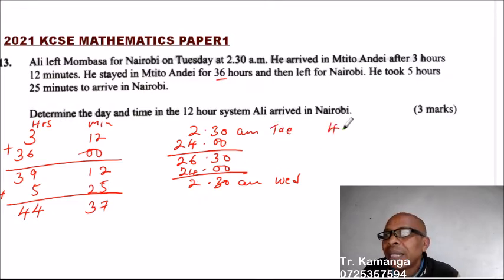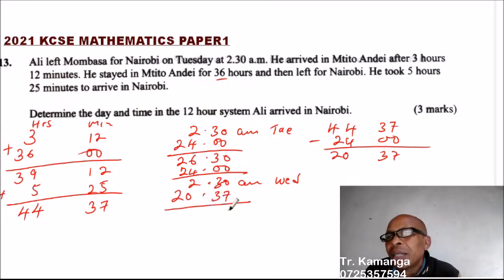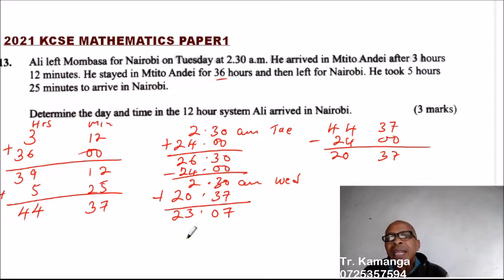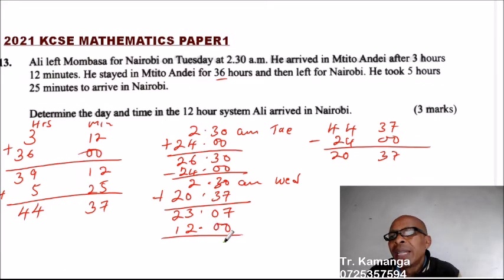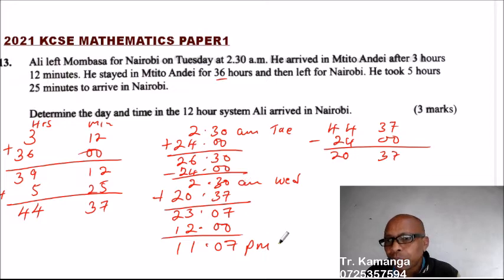Because he took 44 hours 37 minutes total, you subtract 24 hours, and you are left with 20 hours 37 minutes. So you add 20 hours and 37 minutes to the departure time of 2:30 AM. This gives 23:07, which in the 12-hour system means you subtract 12 hours to get 11:07 PM. So he arrived in Nairobi at 11:07 PM — that is at night, on Wednesday.